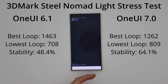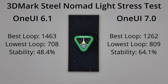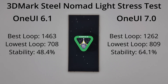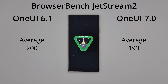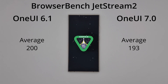Looking at 3DMark now, we can see the Steel Nomad Light stress test here, and we can see best loop — it can only get 1262 on One UI 7, although it does get a better lowest loop and it is more stable at 64%. The last test was the browser benchmark with Jetstream 2 — we can see One UI 6 beating One UI 7 here with 200 points versus 193 points.